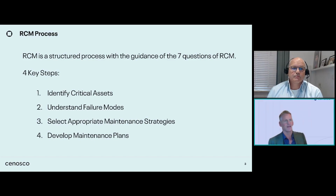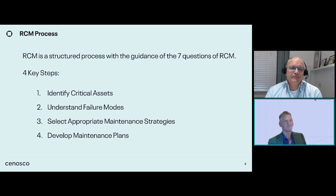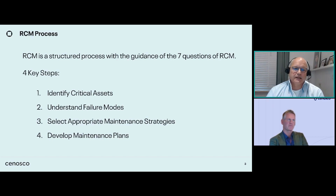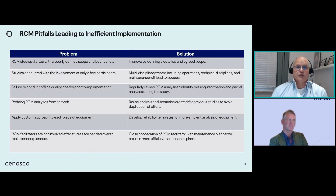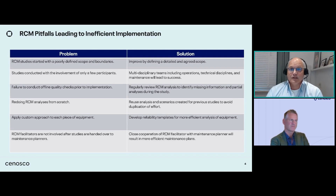There is a perception that RCM is a resource-intensive methodology. Some of the factors contributing to this perception are real. For instance, RCM studies are sometimes started with a poorly defined scope and unclear boundaries. The study starts with the main equipment, but during analysis people get enthusiastic and pick up lower-criticality equipment too, and the RCM facilitator can find it hard to stop and contain that. There is room for improvement in defining a detailed and agreed scope upfront.